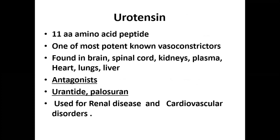The next vasoconstrictor vasoactive peptide is urotensin, which contains 11 amino acids. It is found in the brain, spinal cord, kidneys, plasma, heart, lungs, and liver. These functions are essential to maintain blood pressure within a normal range. Whenever secreted in excess, antagonists are needed. Available antagonists for urotensin are urantide and palosuran, used for renal disease and cardiovascular disorders.